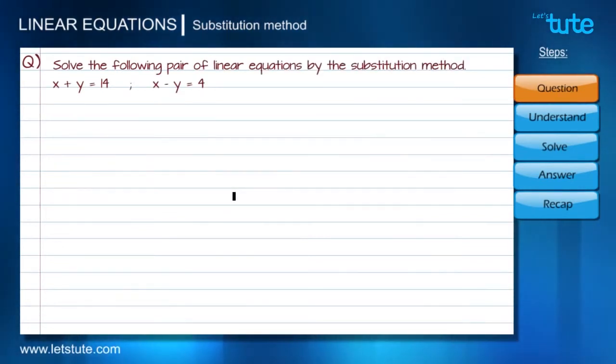Here is the question: solve the following pair of linear equations by the substitution method. The equations are x plus y equals to 14 and x minus y equals to 4. We are going to solve this problem using particular steps, so first of all we'll understand this question.